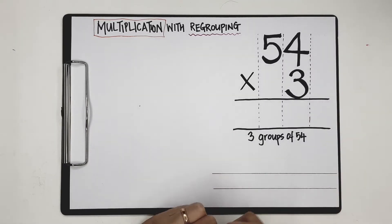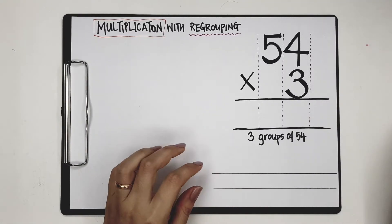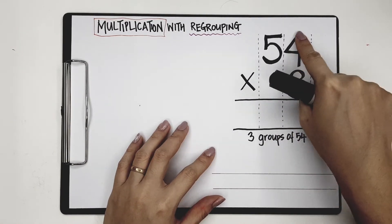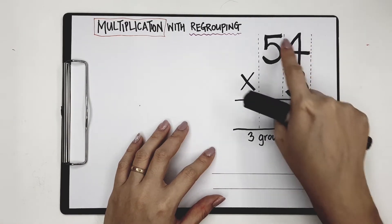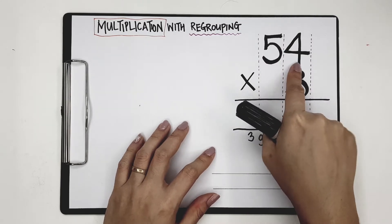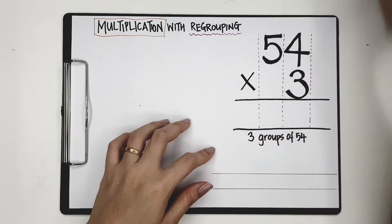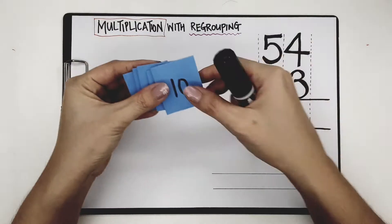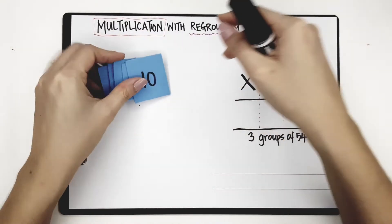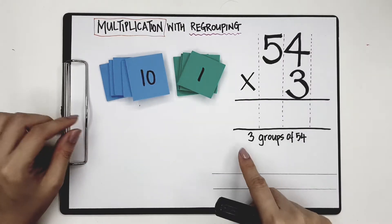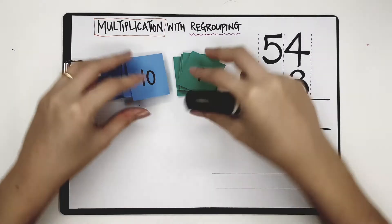Now we know that every digit in a number has its place. 4 is in the 1's place and 5 is in the 10's place. So if I show the number 54 in place value, it is going to look something like this — 5 tens and 4 ones.